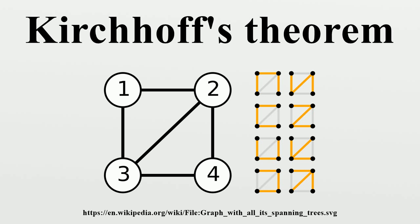We proceed to show that the determinant of the minor M11 counts the number of spanning trees. Let n be the number of vertices of the graph and m the number of its edges. The incidence matrix is an n by m matrix defined as follows: suppose the kth edge connects vertices i and j with i less than j; then e_ik equals 1, e_jk equals minus 1, and all other entries in column k are 0. The Laplacian L can be factored into the product of the incidence matrix and its transpose, i.e., L equals E·E^T.